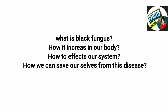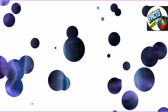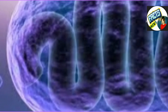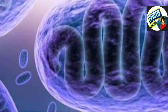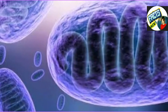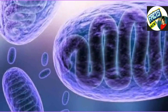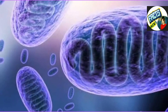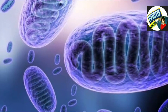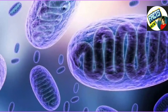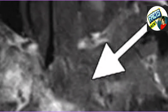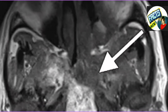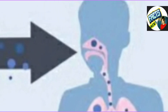First we need to know what is black fungus or mucormycosis. The black fungus infection, also known as mucormycosis, is caused by a fungus called mucormycosis. Black fungus usually affects people whose immune system has been compromised, causing blacking or discoloration over the nose.